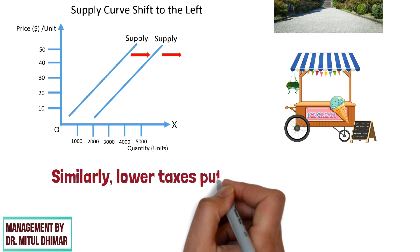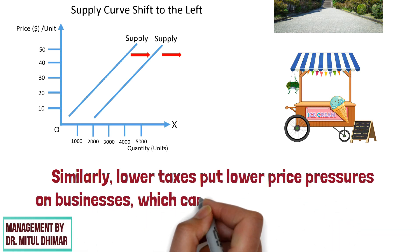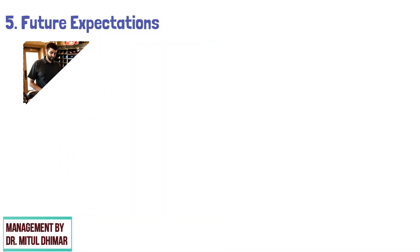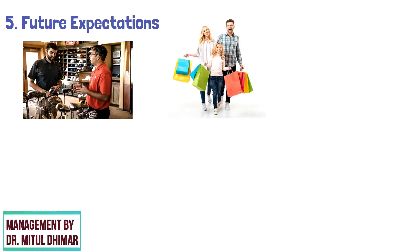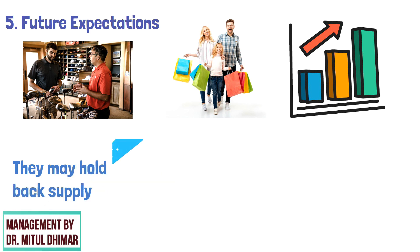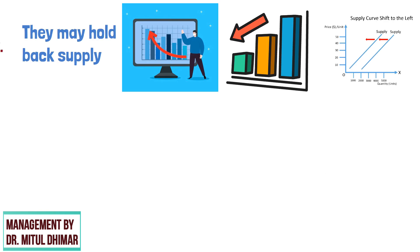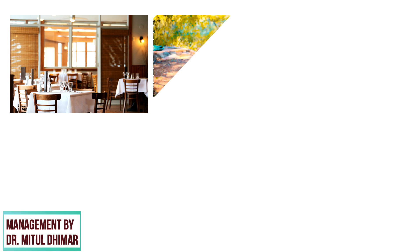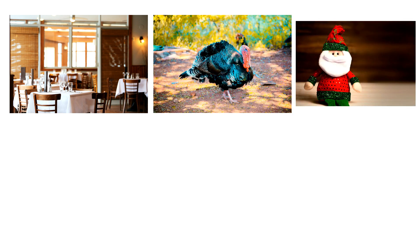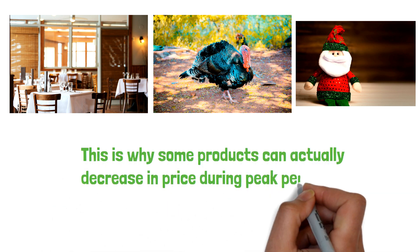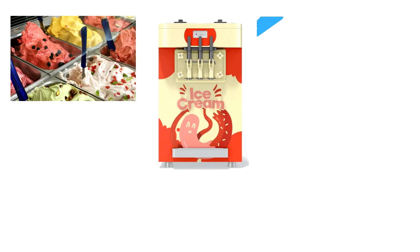Number 5: future expectations. The expectations of the seller are crucially important. When sellers expect future demand to rise, they may hold back supply in order to capture increased demand. This would reduce supply and shift the supply curve to the left. For example, restaurants may increase the number of turkeys they have in the run-up to Thanksgiving and Christmas. This is why some products can actually decrease in price during peak periods. Ice cream manufacturers generally ramp up production coming into the summer months in order to meet future demand.